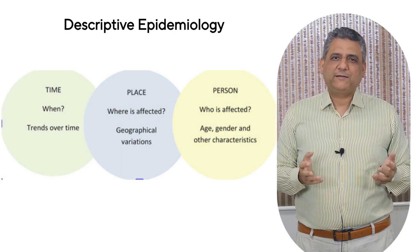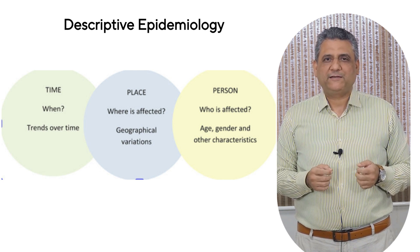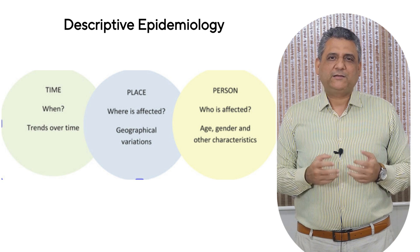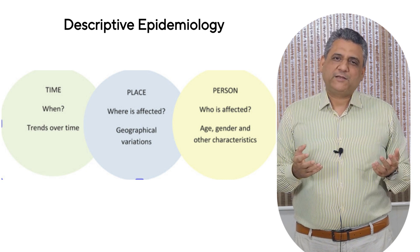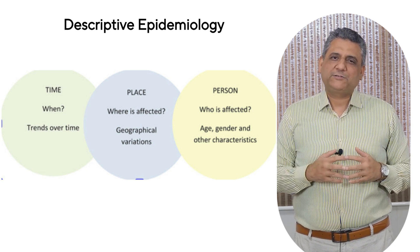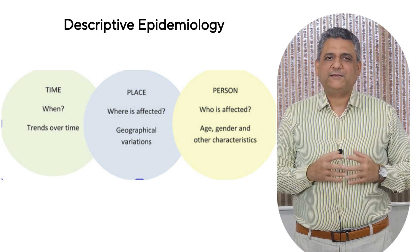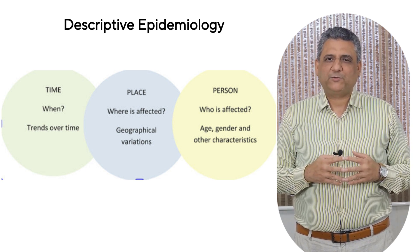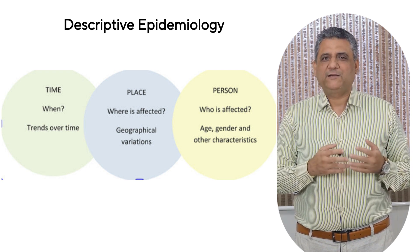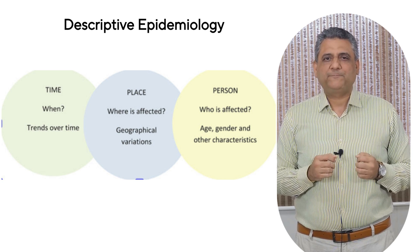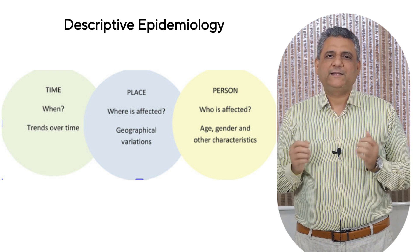Descriptive studies help us understand the distribution of a health event — who it affects, when it occurs, and where it happens. Let's look a bit closer at each of these dimensions: who are the people being affected, where are these cases coming from, and when do they tend to occur? By breaking the data down this way, we start to see the story behind the numbers — patterns that help us generate hypotheses for further analytical studies.